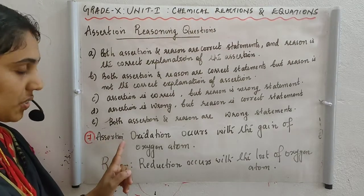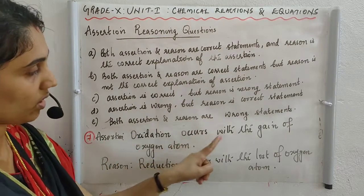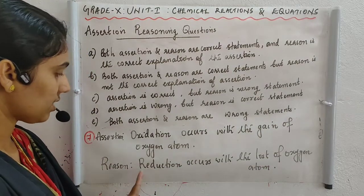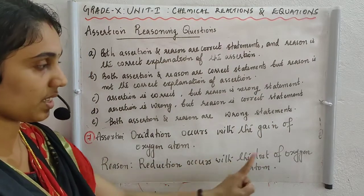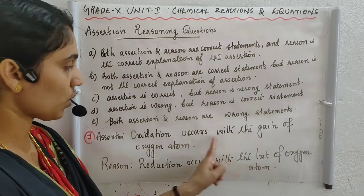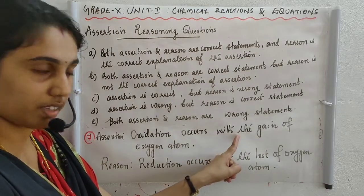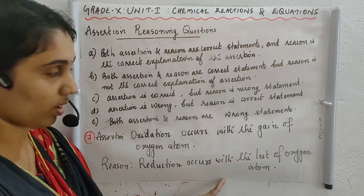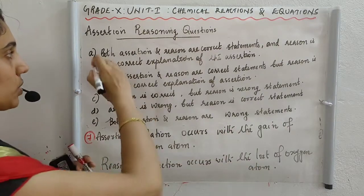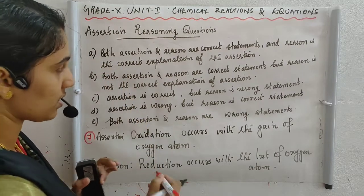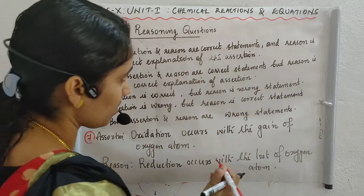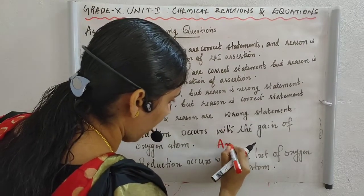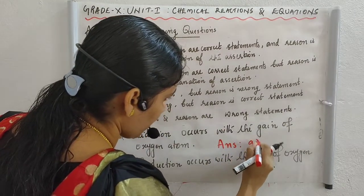Question 7 — Assertion: oxidation occurs with the gain of oxygen atoms. Reason: reduction occurs with the loss of oxygen atoms. Both statements are correct — oxidation means gain of oxygen and reduction means loss of oxygen — and reason is the correct explanation of the assertion. The answer is option A.